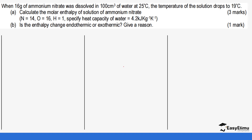Let's do a few questions that will help us understand how to tackle entropy of solution calculations. As mentioned earlier, if you have a solid being dissolved in water we only consider the mass of the water. In this example, 16 grams of ammonium nitrate was dissolved in 100 cm³ of water at 25°C. The temperature of the solution drops to 19°C. Calculate the molar enthalpy of solution of ammonium nitrate and state whether the enthalpy change is exothermic or endothermic, giving a reason.